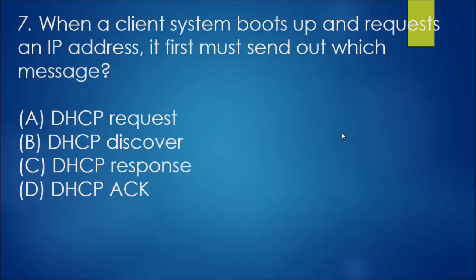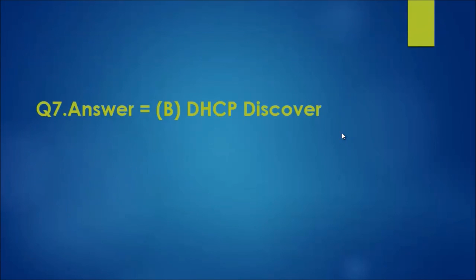Number seven: when a client system boots up and requests an IP address, which message must it first send out? This involves the DHCP four-way handshake. Initially, the client sends a DHCP discover message — the first message in the handshake — to discover if a DHCP server is on the network.